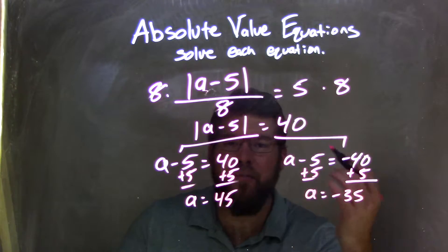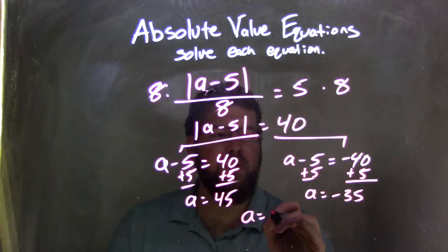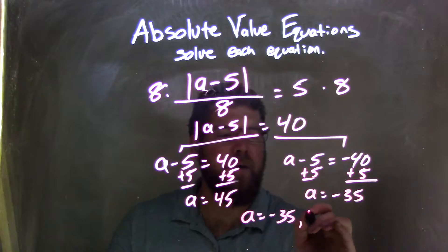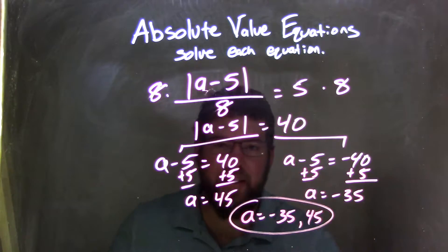I have my two answers. I'm going to write them from least to greatest, so a equals negative 35 and positive 45 is my final answer.